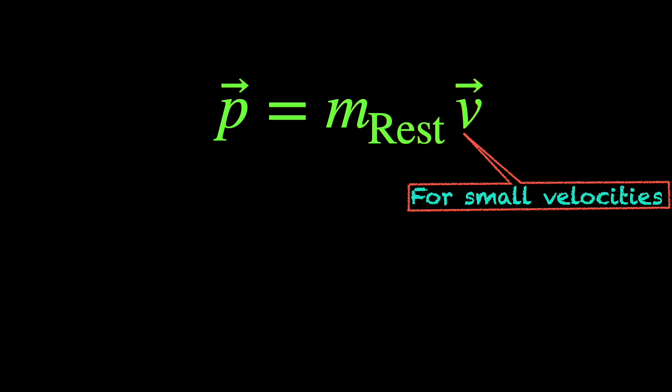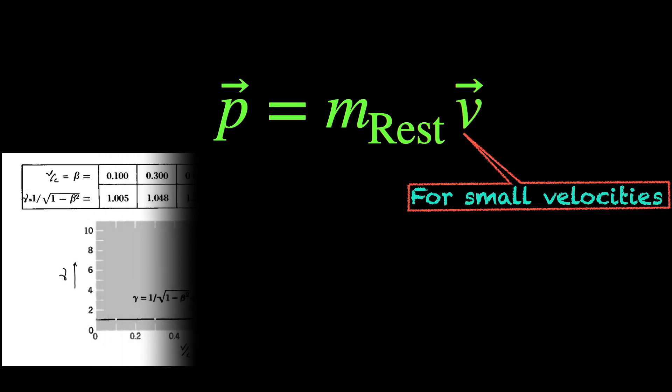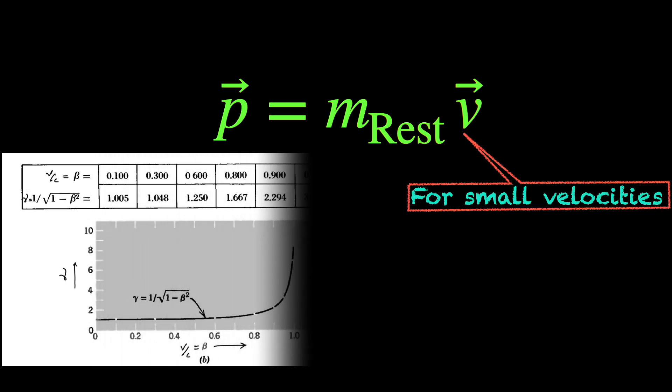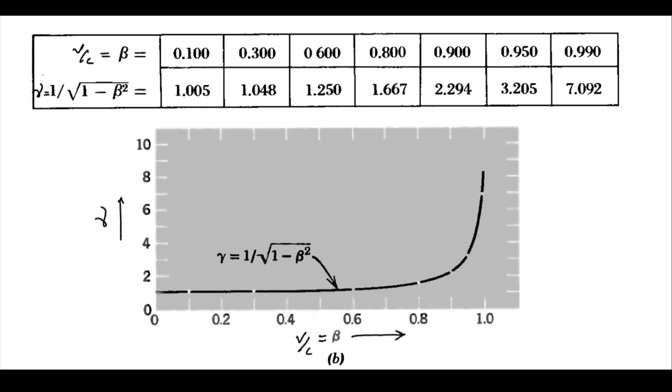We can readily see this by checking how the value of the Lorentz factor gamma changes as we increase beta or v by c, i.e. the velocity in units of light speed. This is a plot of the Lorentz factor versus the relative velocity.